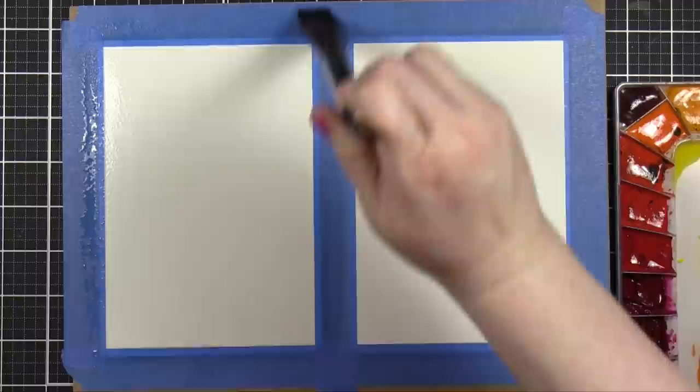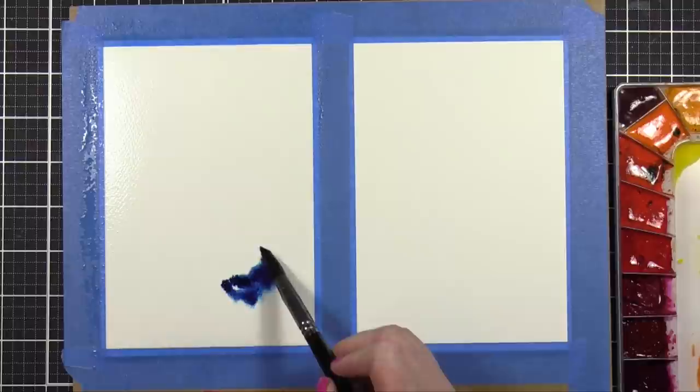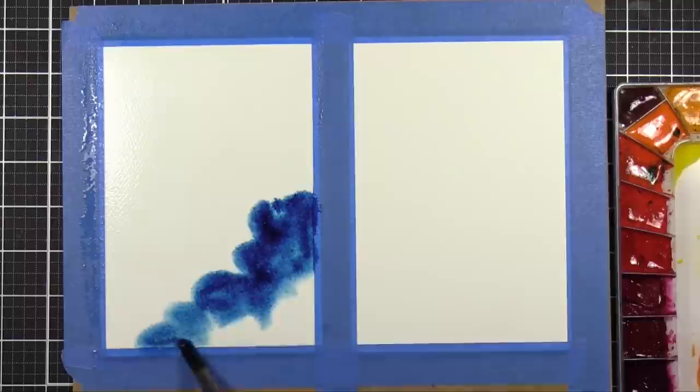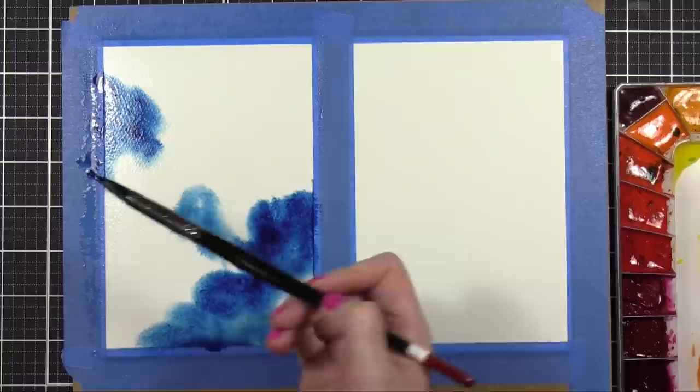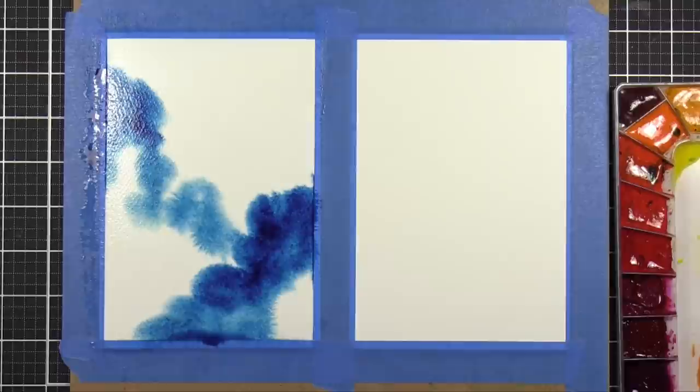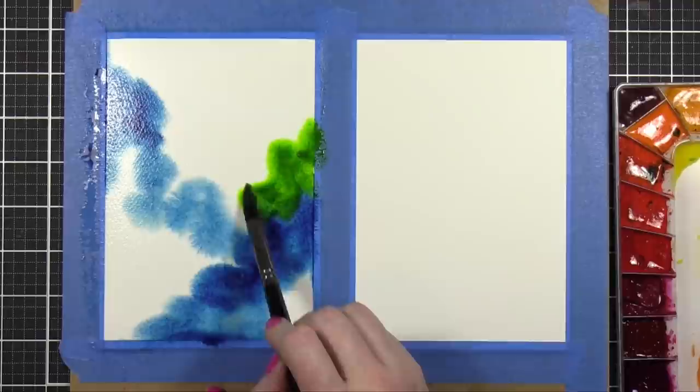At the beginning here, I put down a pretty generous layer of water, let that soak in for a minute, and then I started to drop in color. I'm not mixing color on my palette. I'm bringing these straight from the wells in my palette. So this is pure color and I put down a really strong amount of paint and then get my paintbrush wet and kind of soften those edges and spread things out from there.